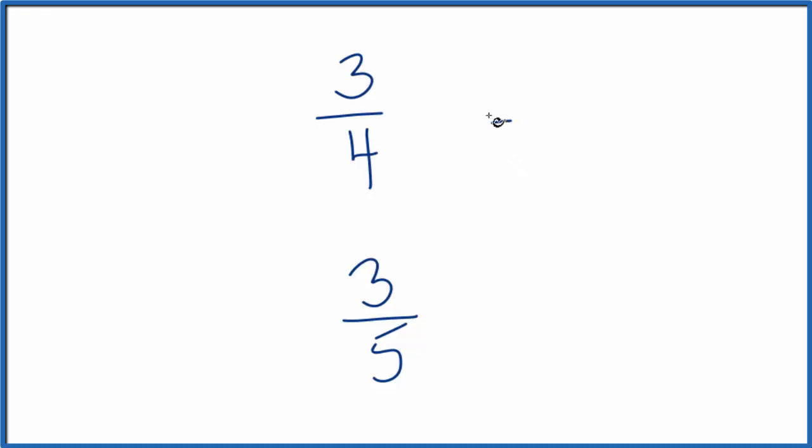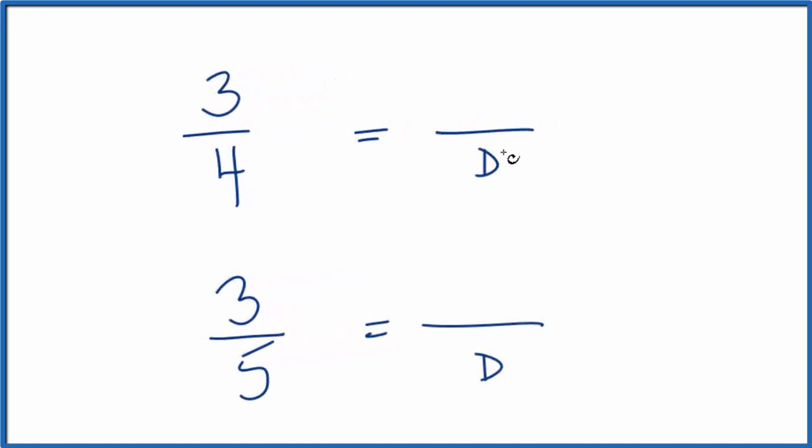First, we could find a common denominator. So if we can get this number to be the same, then we could just compare the numerator. Whichever numerator was bigger, that'd be the larger fraction. So let's do that first.